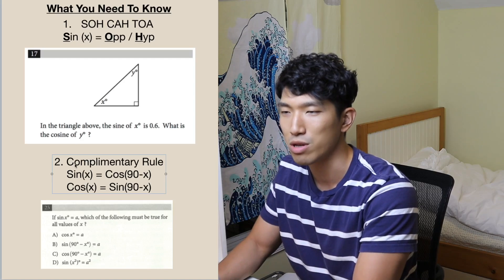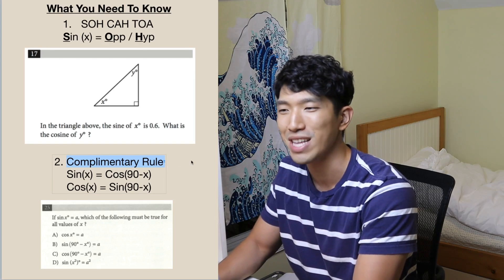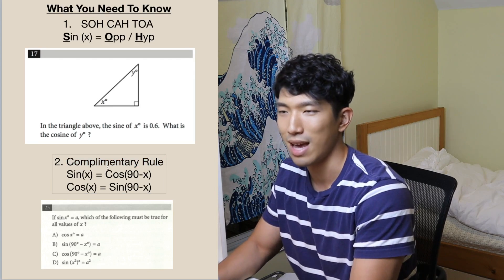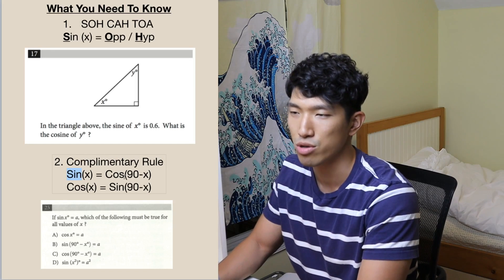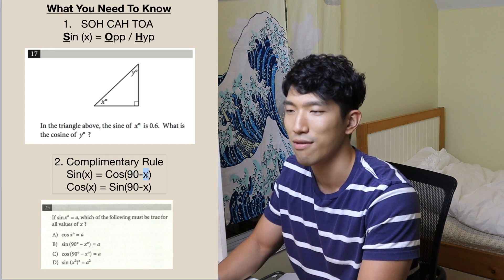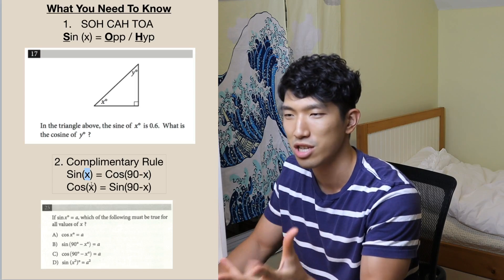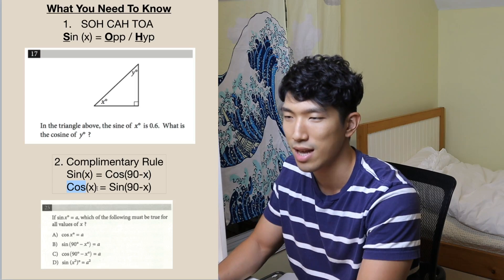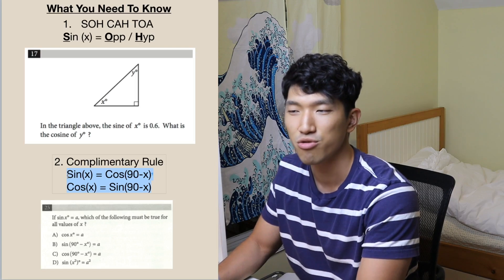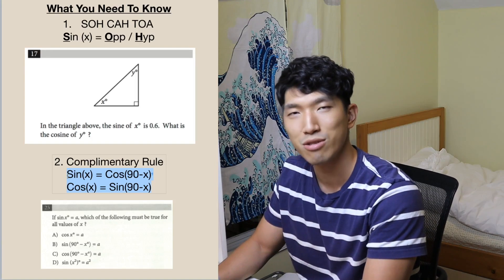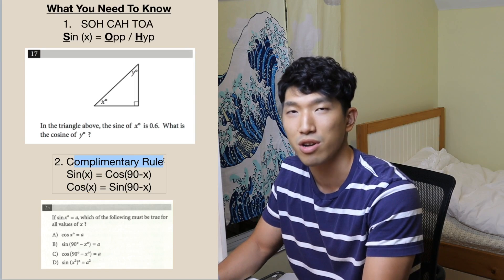The second type is going to be something related to the complementary rule. Complementary rule is a trig identity which says sine of x is equal to cosine of (90 minus x). And just the opposite way, cosine of x is equal to sine of (90 minus x). As long as you know these two identities, you can solve any question relevant to complementary rule.